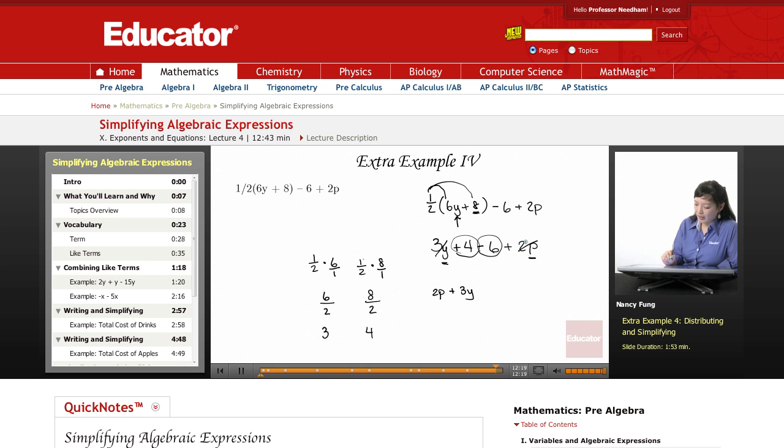And then I have 4 minus 6. 4 minus 6 is negative 2. And so now I've simplified it as much as I can. And sometimes you can't simplify it anymore and you'll have to leave it.